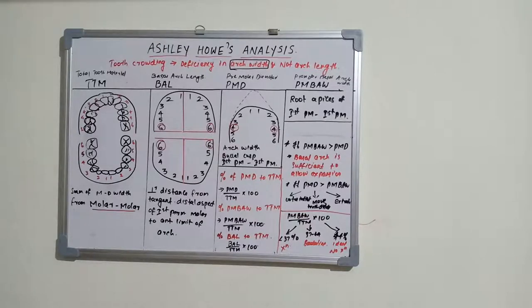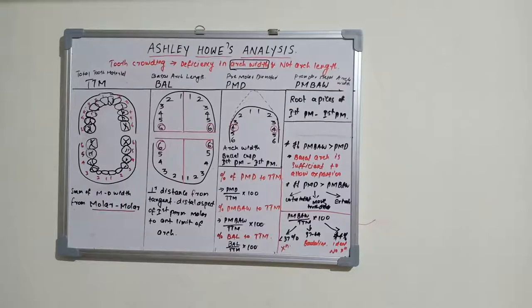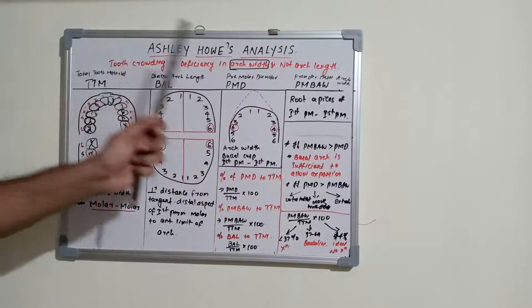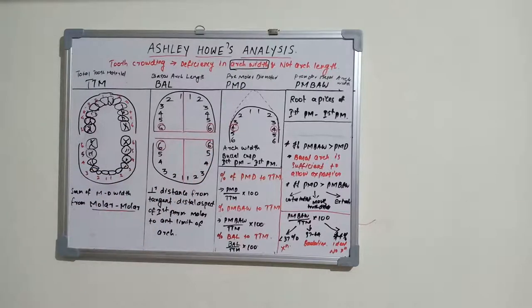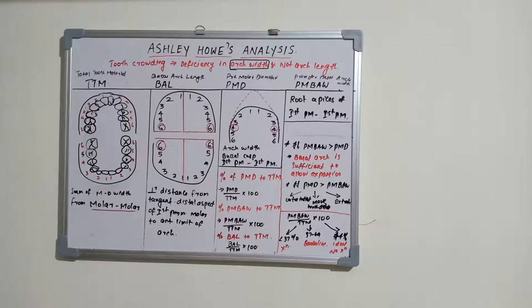Welcome back to a new session on Dentistry and More. Today's topic is Ashley's analysis. This analysis is peculiar because tooth crowding is attributed to arch width rather than arch length. Ashley's analysis stresses upon the relationship between the arch width, whereas most other analyses point to deficiency or discrepancy in arch length as the cause of tooth crowding.